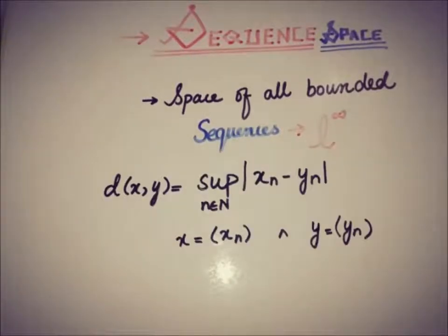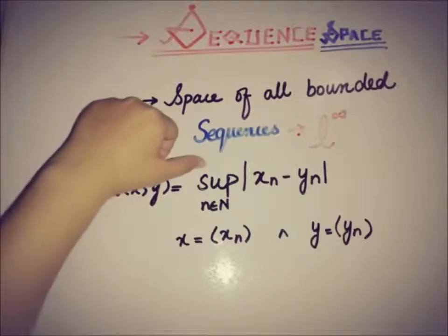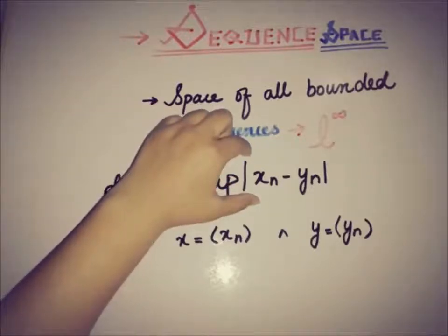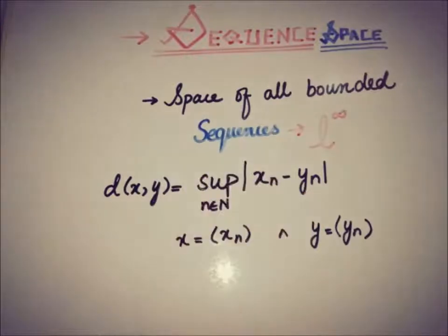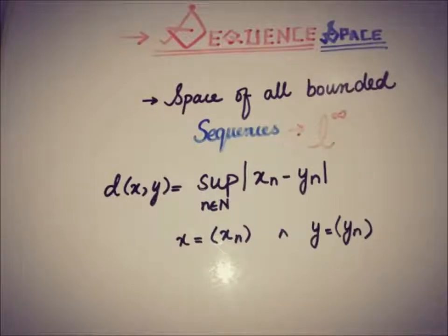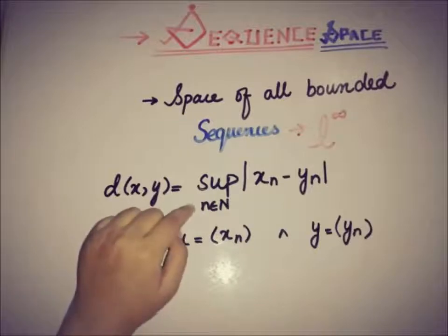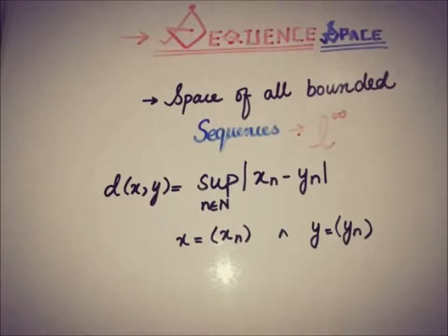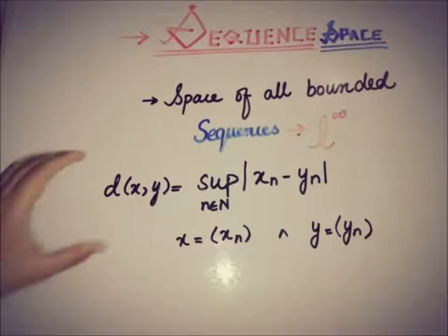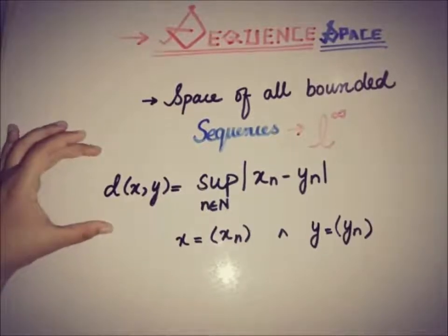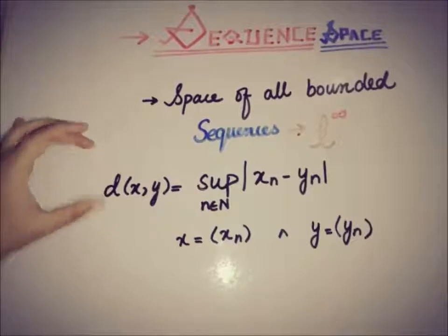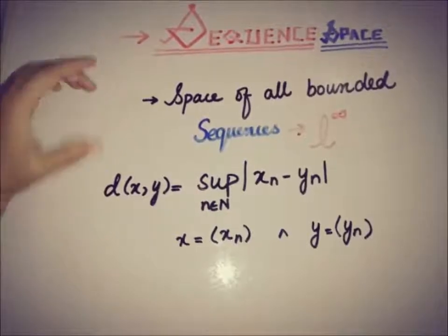The metric on L infinity is the supremum of the absolute values of the difference of the two sequences x and y, where x and y are two bounded sequences from the space, and n goes to infinity. The target is to prove this function, defined on the space of bounded sequences, as a metric.